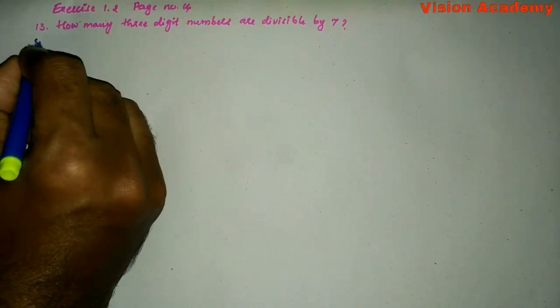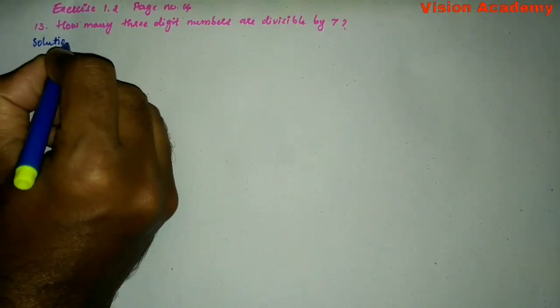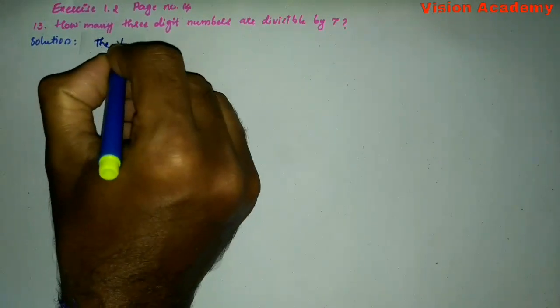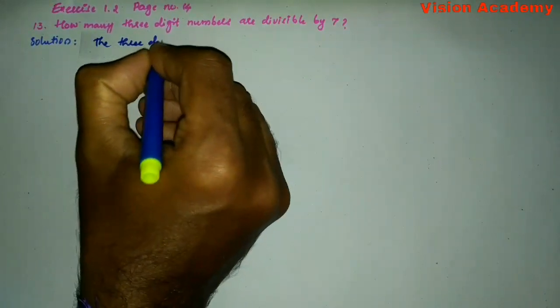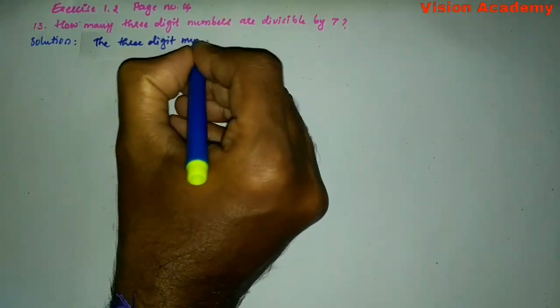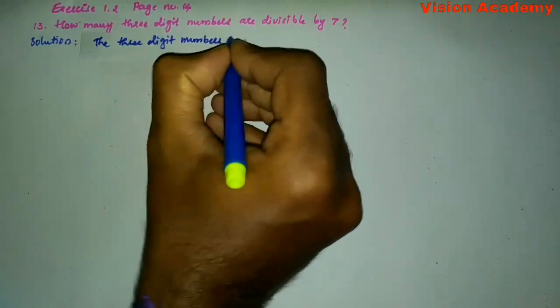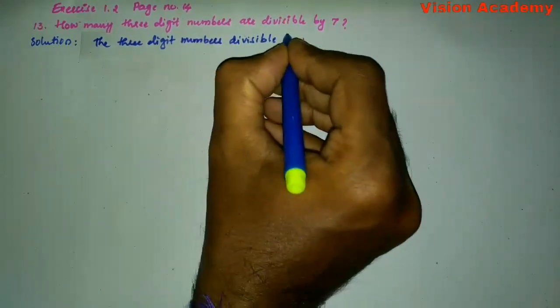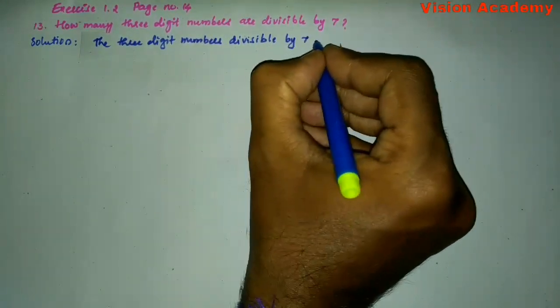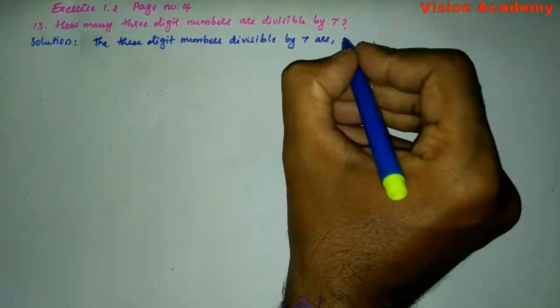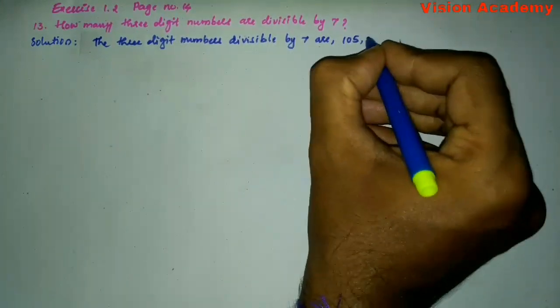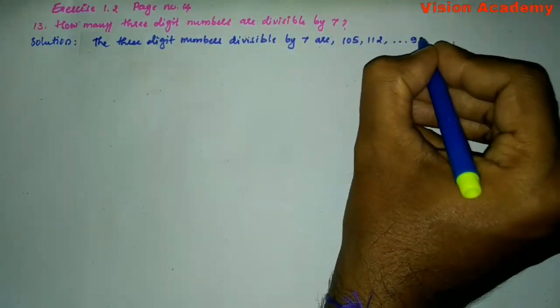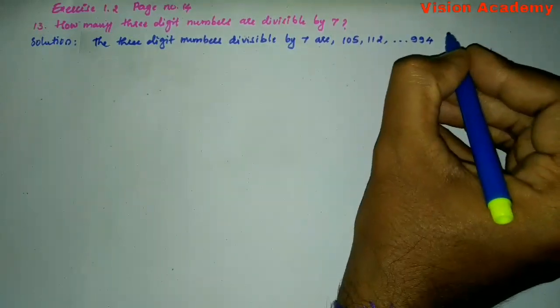Let us find the solution for the given problem. The three-digit numbers divisible by 7 are 105, 112, and so on up to 994.